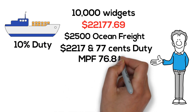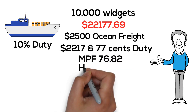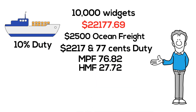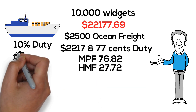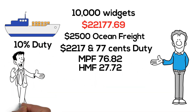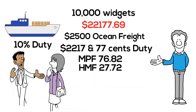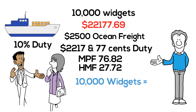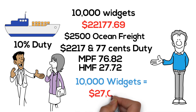MPF will be $76.82 and harbor maintenance fee $27.72. So the total invoice that John is going to give to Liz, for 10,000 widgets shipped to her with all expenses included, will be $27,000.